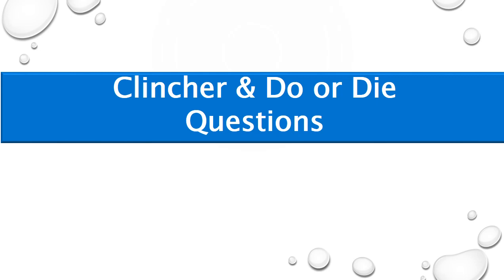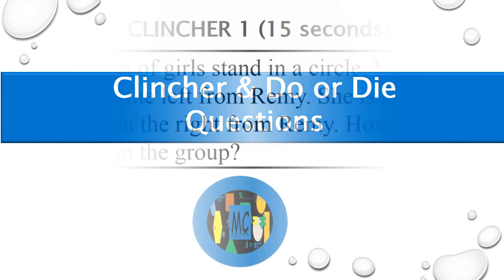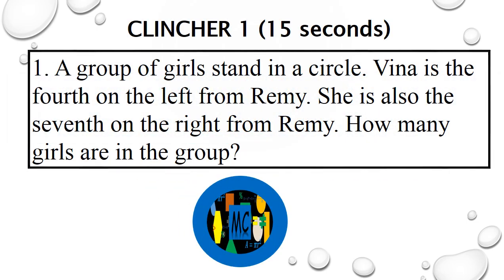Grade 1. Clincher and Do or Die Questions. Question 1: A group of girls stand in a circle. Vina is the 4th on the left from Remy. She is also the 7th on the right from Remy. How many girls are in the group?